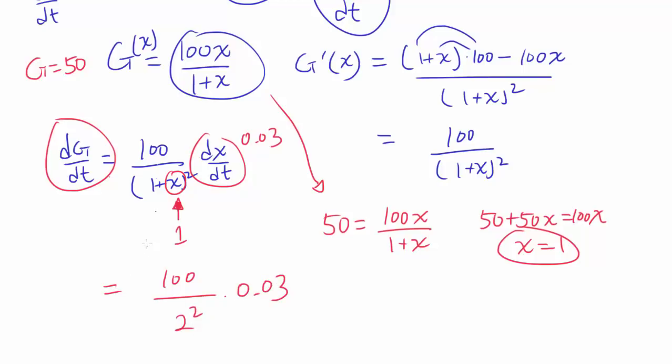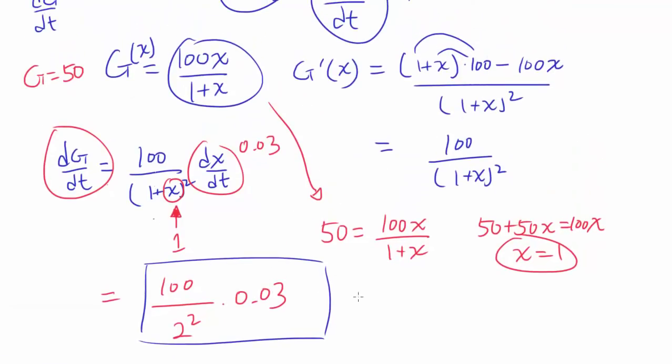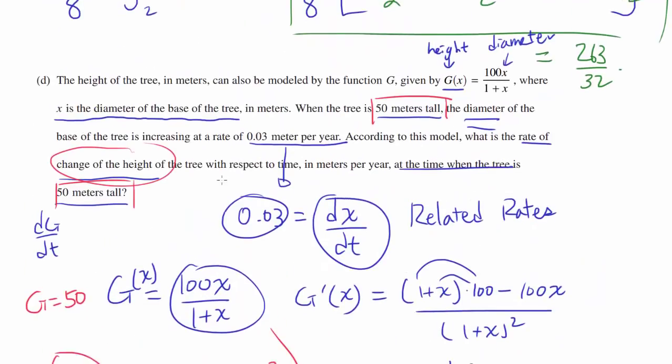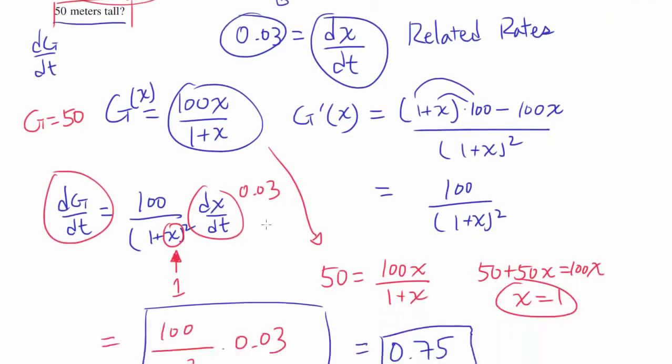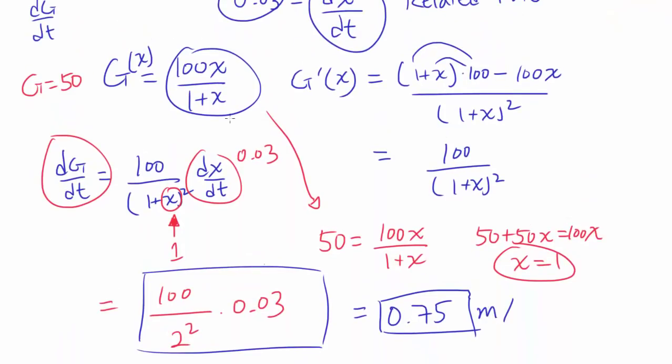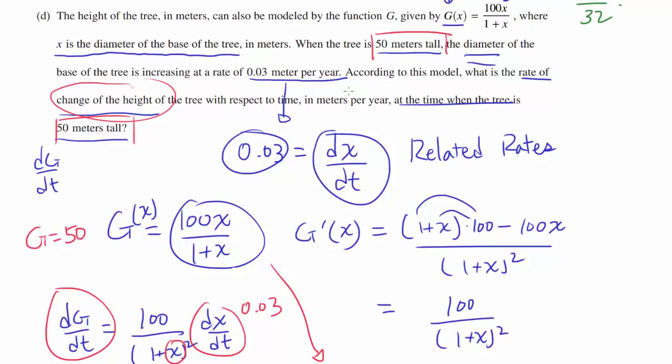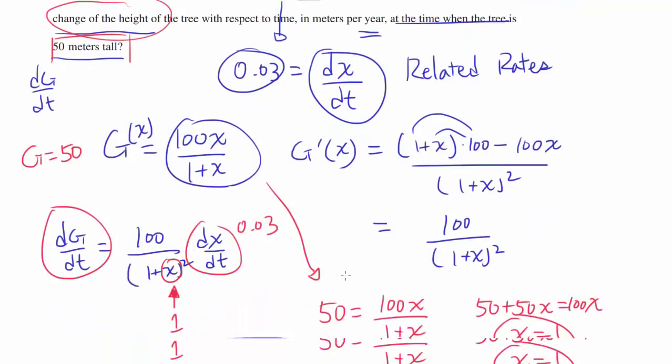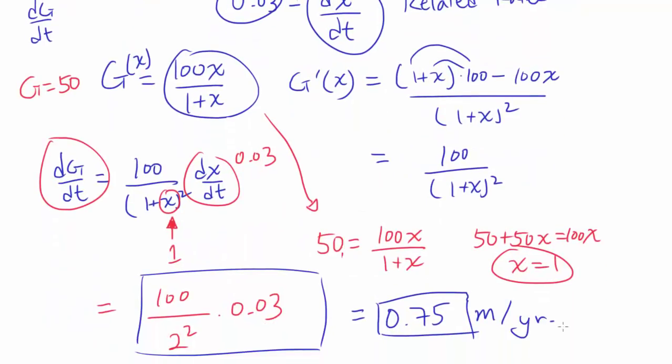So you have 100/(2^2) times 0.03. You don't have to simplify this. You can leave it as it is and be done. Or if you really want to, you can simplify it as 0.75. And what's the unit? You're looking at the height per time. The height is measured in meters, and the time is measured in years. So we should have meters per year.